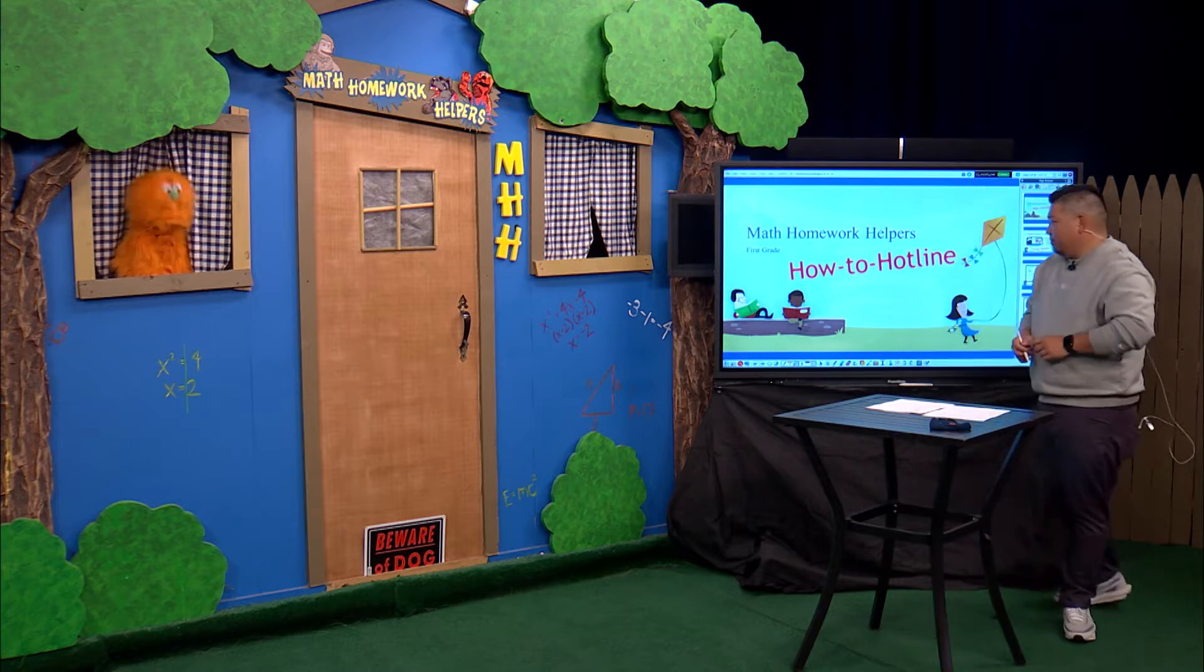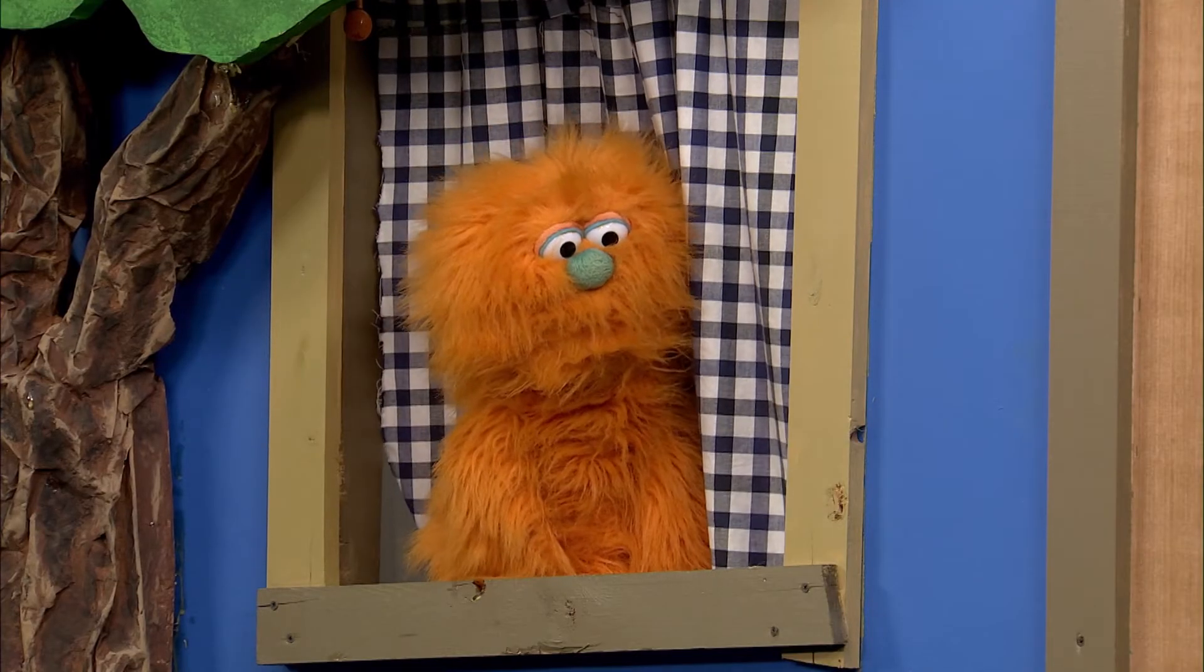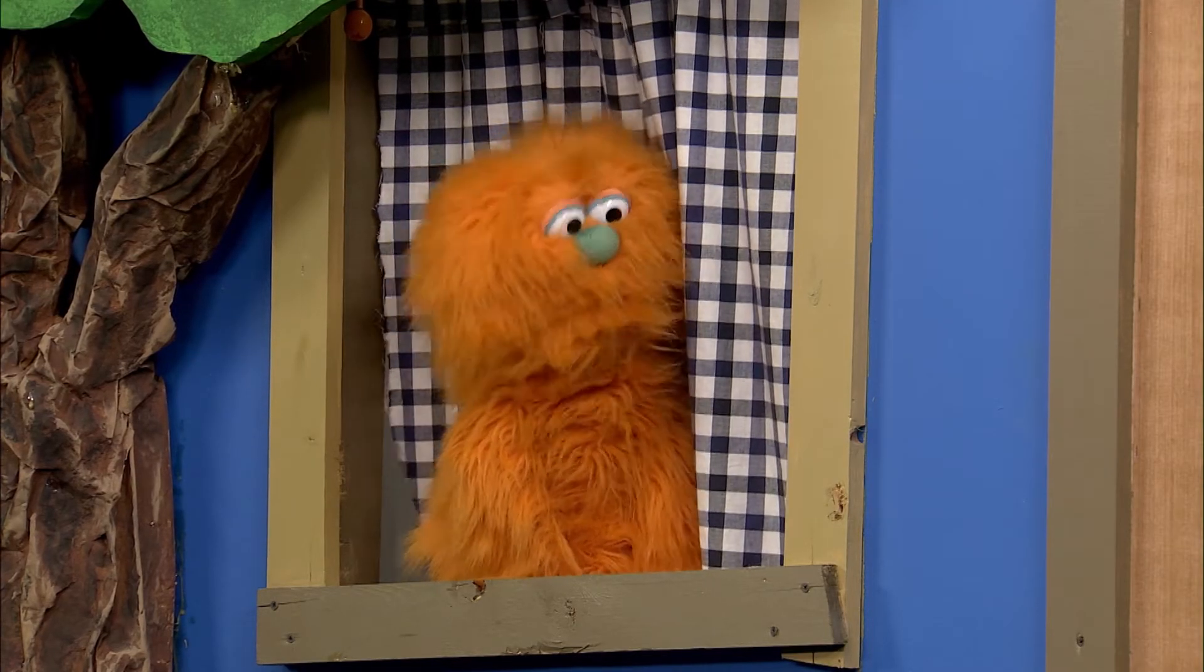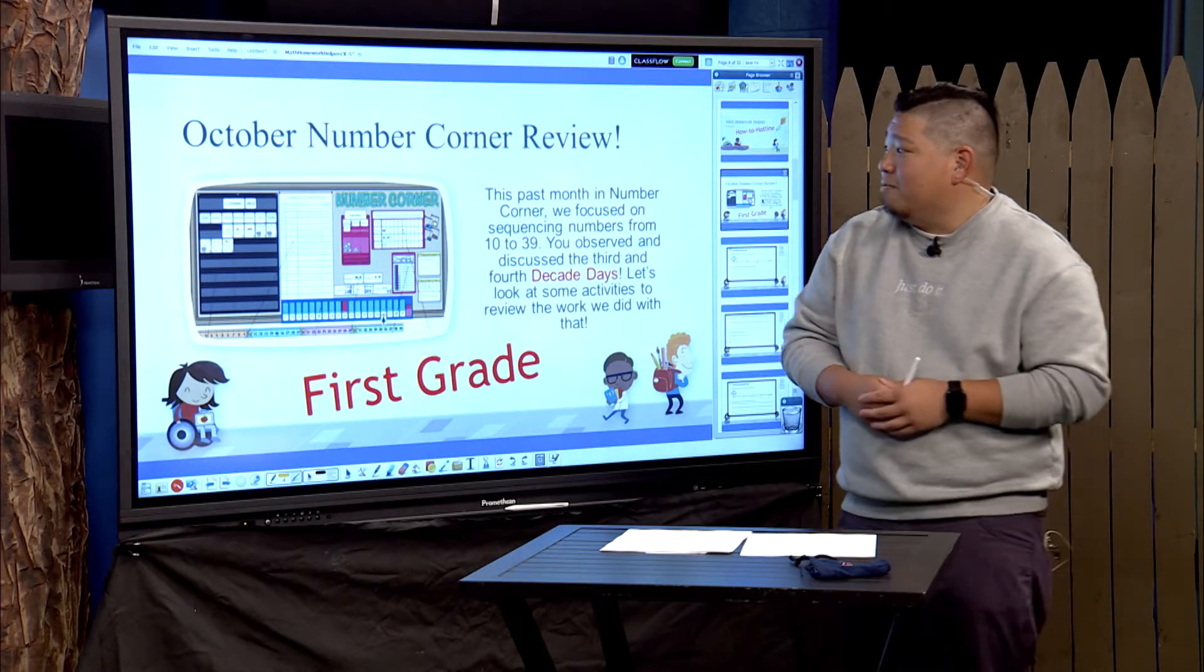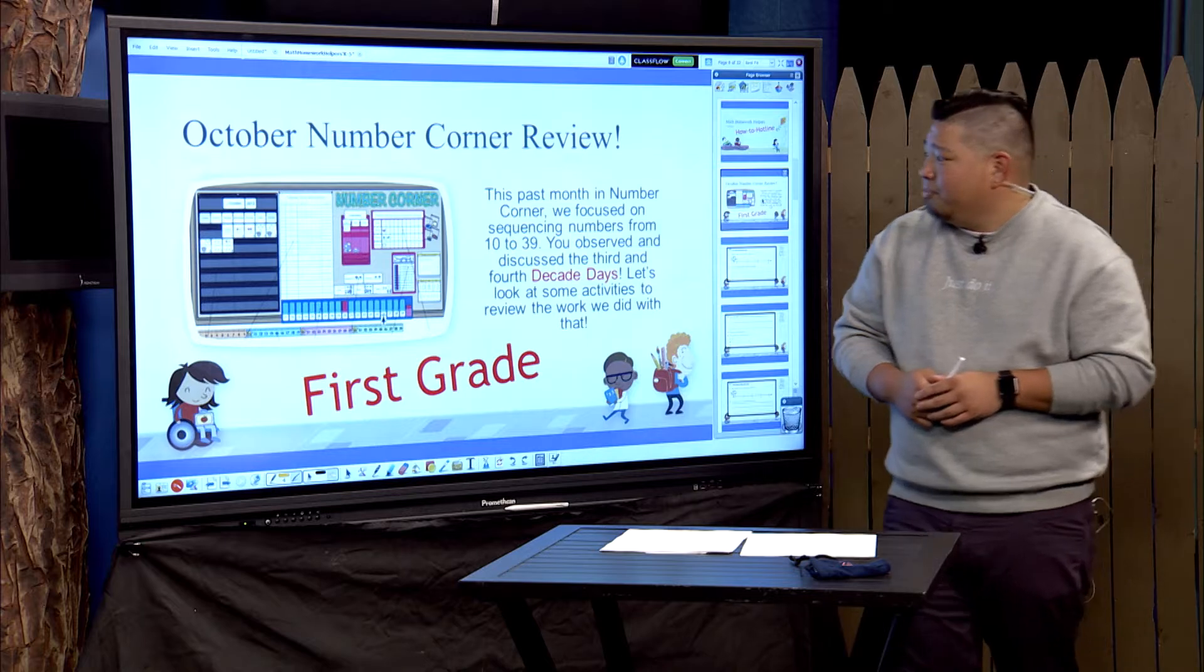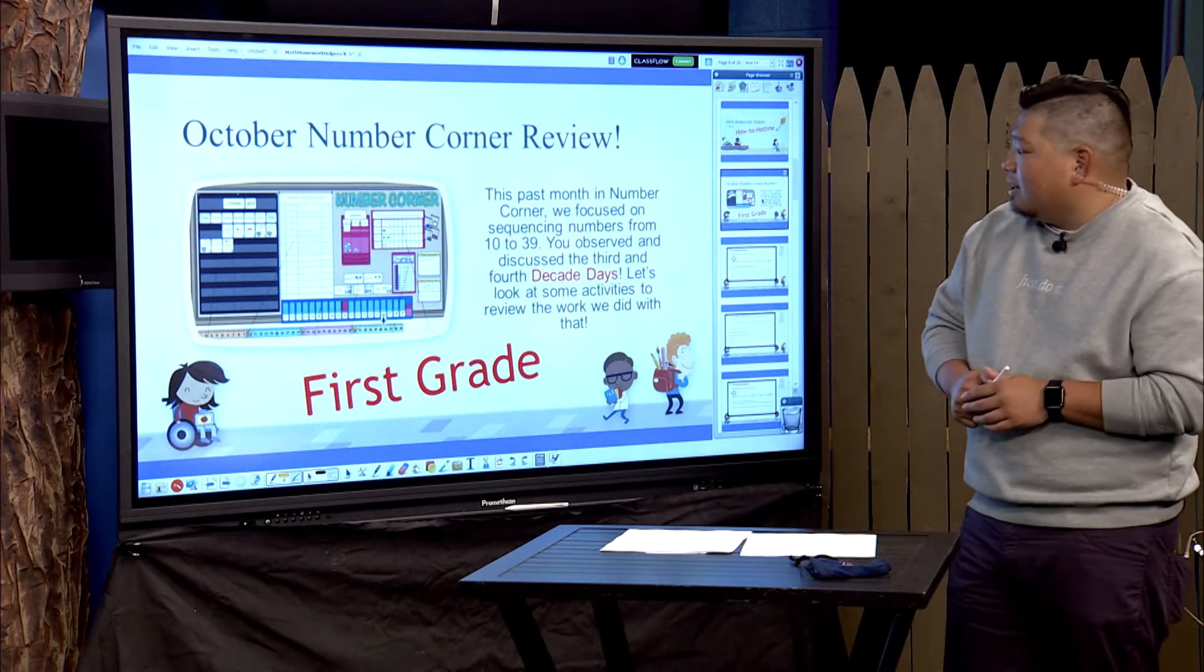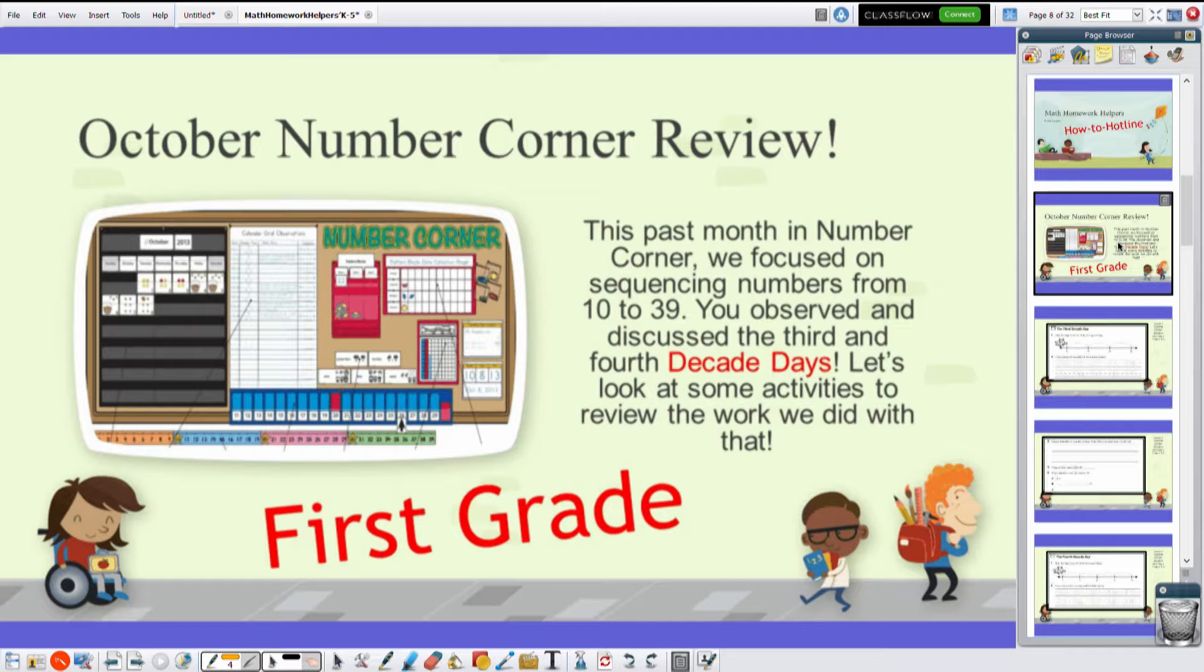And we can get started. Very good. Safety first, boys and girls. Speaking of getting started, Mr. Tang, what math stuff do you got in the tank for us today? Well, Max, our first grade friends have been working in their October number corner on reviewing some sequencing from numbers from 10 to 39. Oh, wow. They've observed and discussed the third and fourth decade days. So we'll talk a little bit about what those mean, but let's go ahead and take a look at some activities to review some of that work.